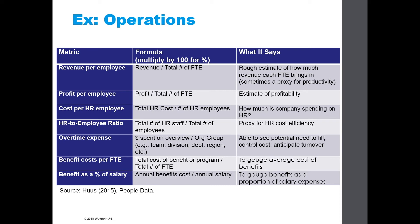The last category is operations, which tells HR how efficiently the HR department is running. Revenue per employee is total company revenue divided by total full-time employees. Profit per employee is similar, but uses profit instead of revenue — it's a rough gauge of estimated profitability per employee. Cost per HR employee is total HR cost divided by the number of HR employees, which again gets at the efficiency and effectiveness of HR departments.